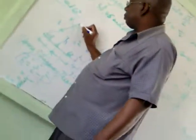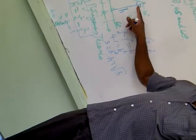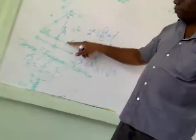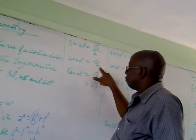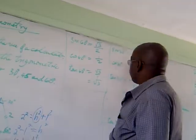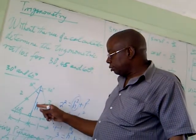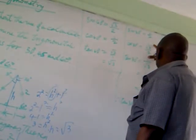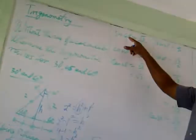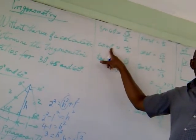For 30 degrees now — the sine of 30 is opposite, which is 1 upon hypotenuse, which is 2, so that's a half. The cosine of 30 is adjacent, which is root 3 upon hypotenuse, so root 3 upon 2. Notice: the sine of 60 equals the cosine of 30, and the sine of 30 equals the cosine of 60.